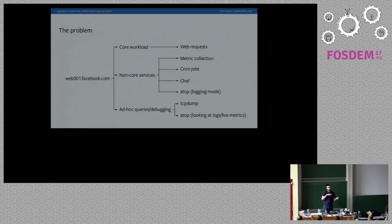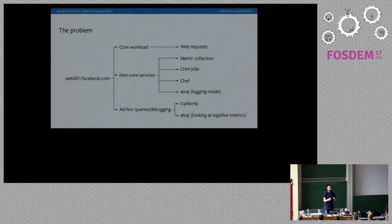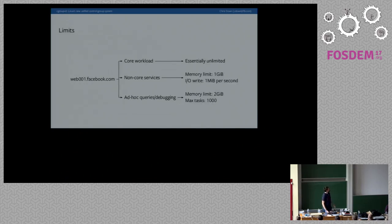Then there's a third class: ad hoc queries and debugging. These are things you don't know you need and that only get run when an incident is already happening. We want people to be able to dynamically determine the importance of those things as the incident is going on — whether they should take precedence over the core workload or not. So cgroups is a very good use case for this.